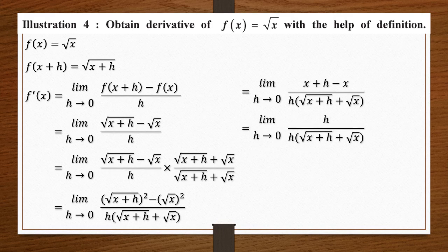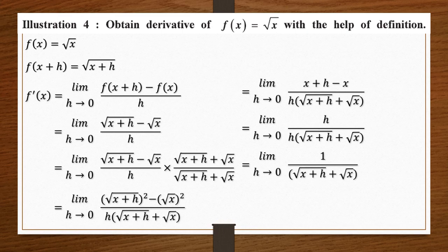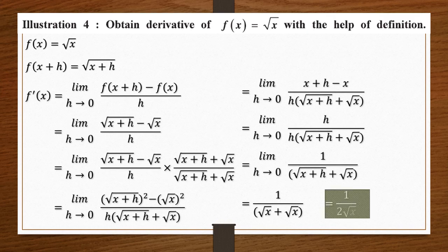The numerator becomes (x+h) − x after the squares cancel the roots, giving h in the numerator. The h in numerator and denominator cancel, leaving limit h tends to 0 of 1 upon [√(x+h) + √x]. Setting h = 0 gives 1 upon (√x + √x), which equals 1 upon 2√x. So the derivative of √x is 1/(2√x).